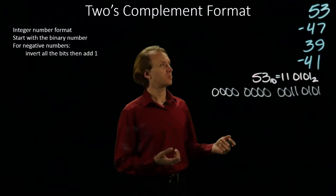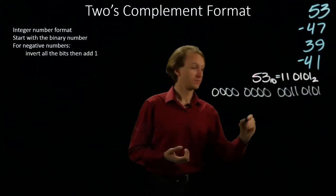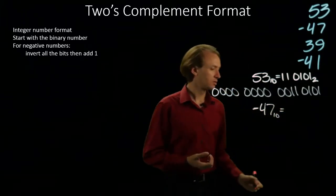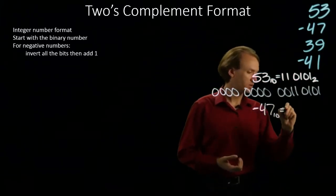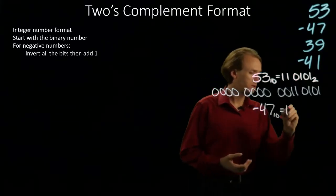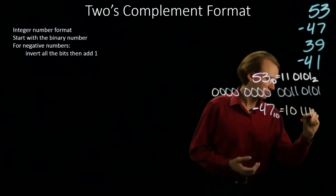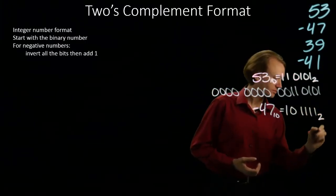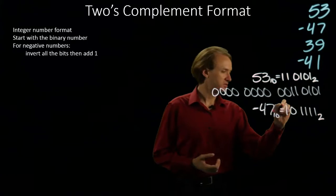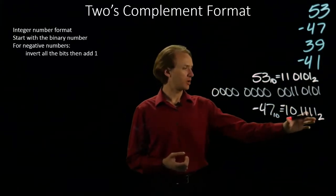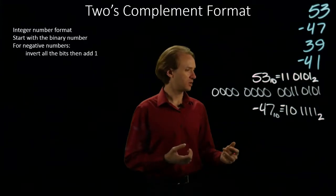My next number is negative 47. So 47 is 32, but it's one less than 48, so I will really have 32 plus 15. And this is a negative number. Again, I'll start by writing my number as a positive number.